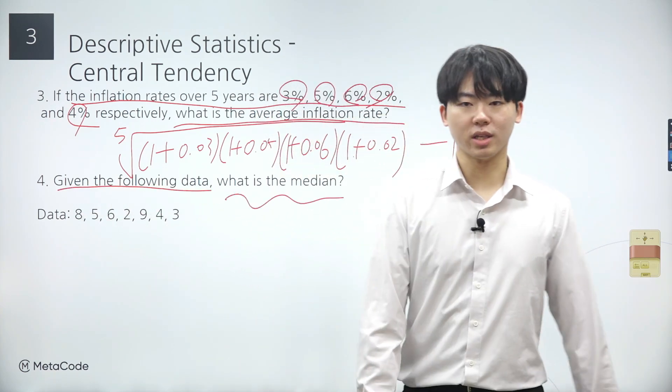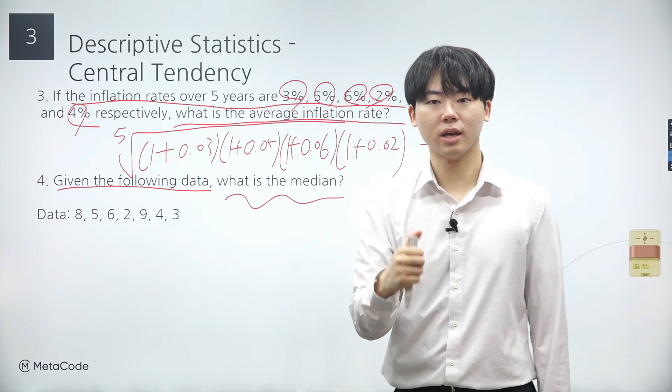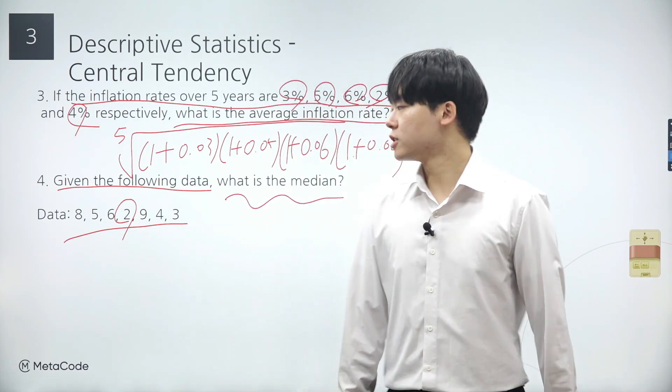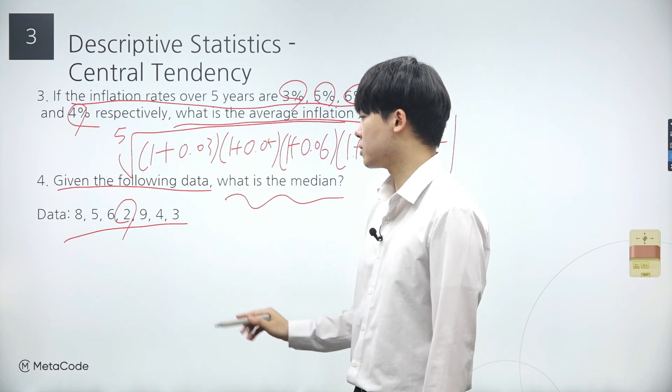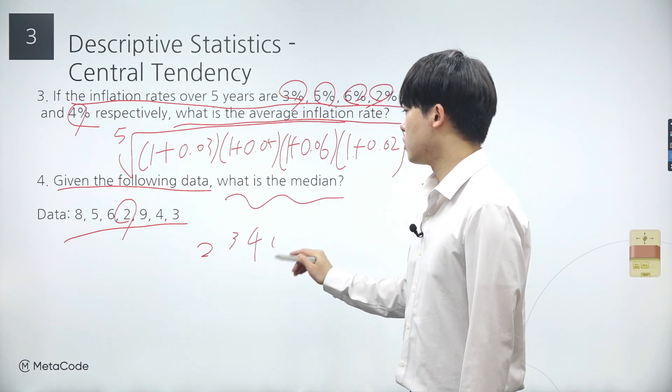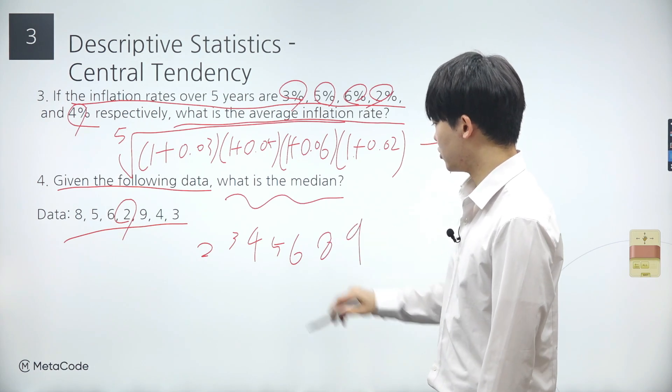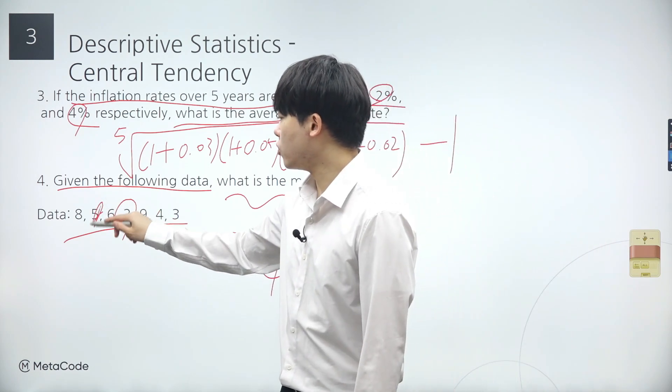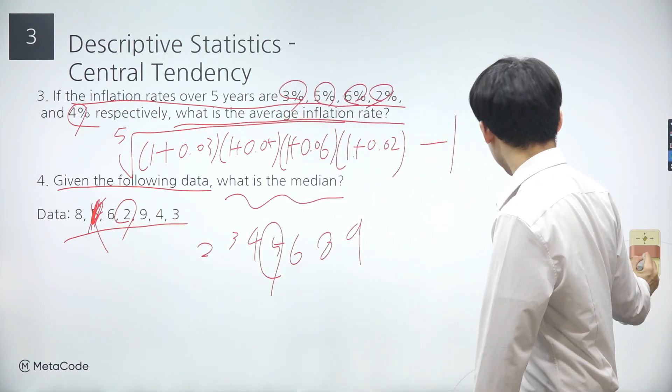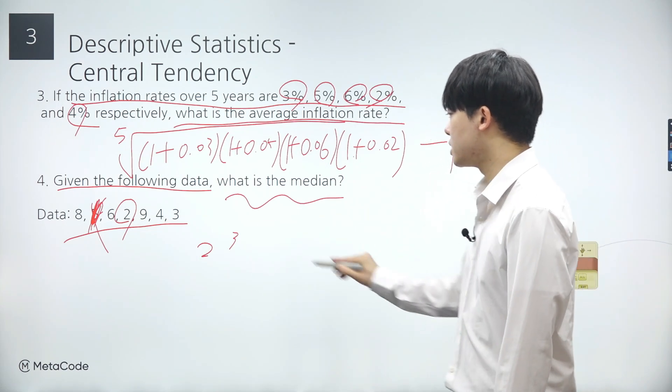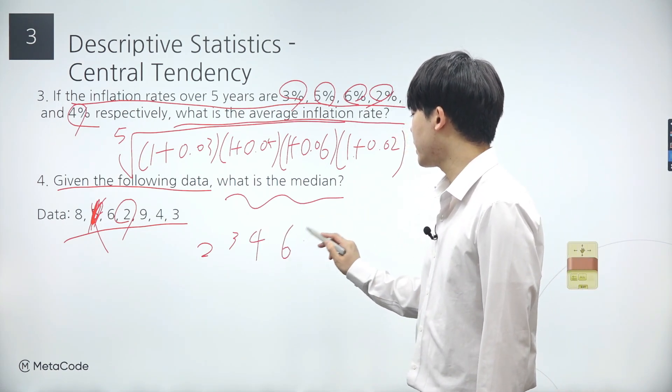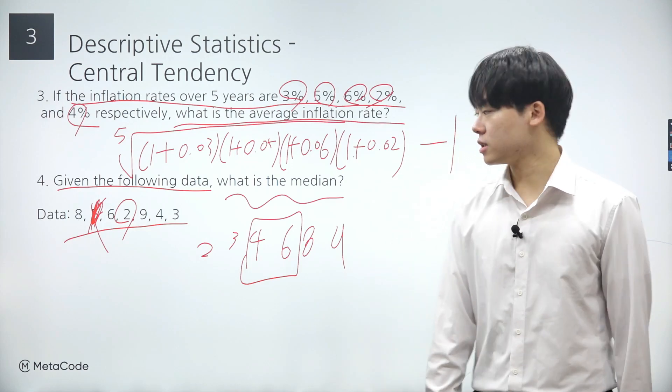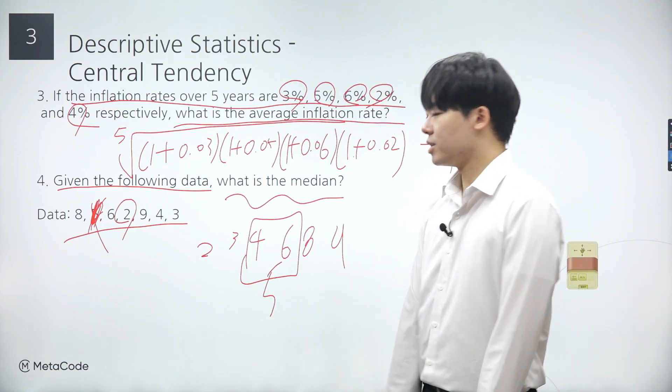The final problem involves finding the median of a data set. Earlier, I mentioned that finding the median is the same as identifying the central data point. However, before we search for the central data point, we must first sort the data set. Let's arrange the data in ascending order, 2, 3, 4, 5, 6, 8, and 9. Therefore, 5 is the median. Now suppose the data set does not include the number 5. In this case, our sorted data set would be 2, 3, 4, 6, 8, and 9. Here, we have two values located at the center. In such instances, we calculate the average of the two numbers, which is also 5.